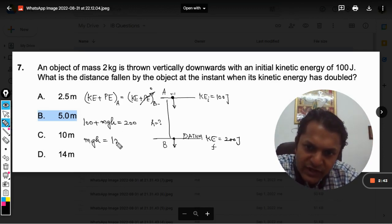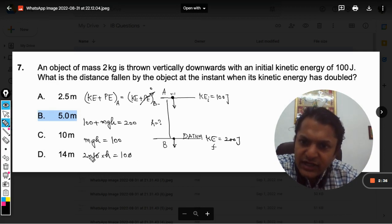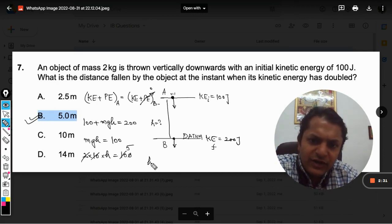So on solving we are getting this. Mass is 2, gravity is 10, H we need to find. So this is 20. So obviously it will be 5 meters. So yes, our answer will be B.